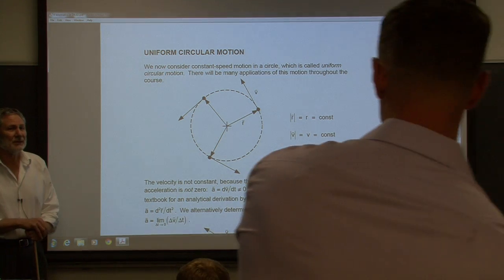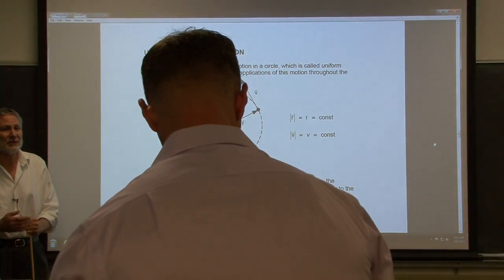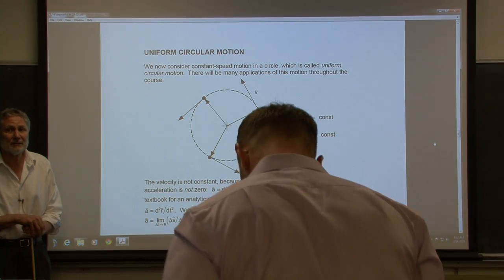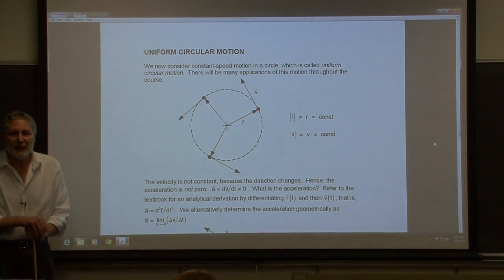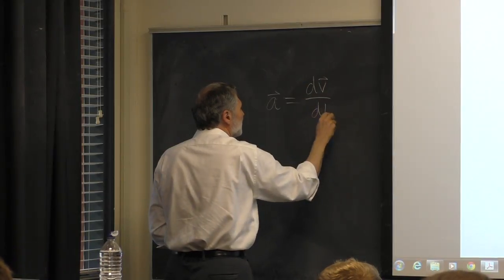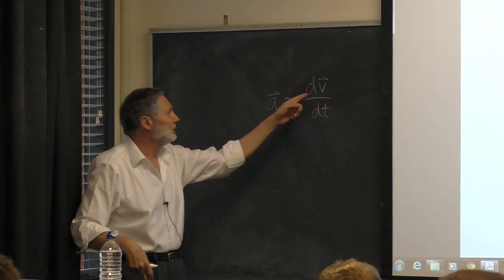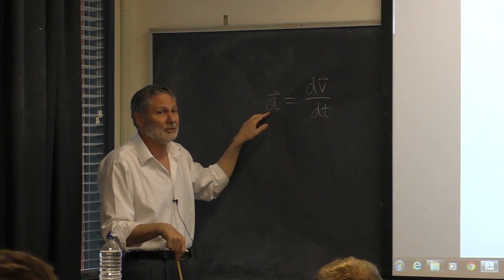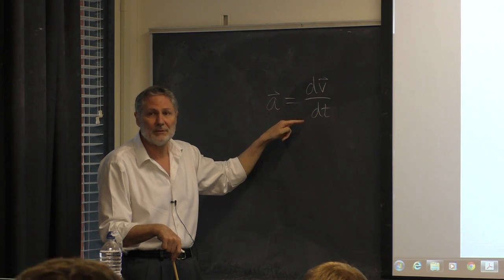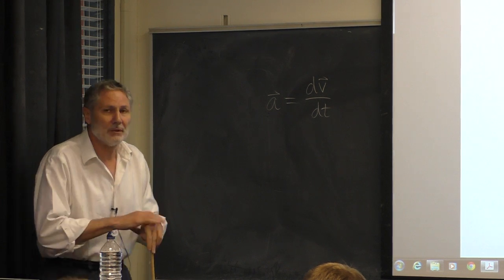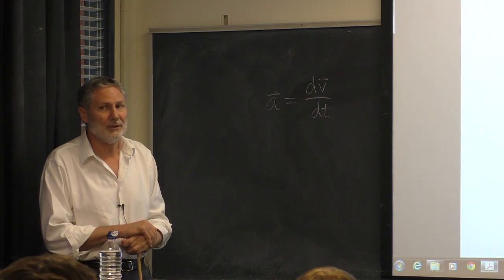The speed is constant, but the direction is continually changing. Is the acceleration zero? The acceleration is how the velocity changes — the rate of change of velocity with respect to time. Any way that you change the velocity, whether you change the speed or the direction, this derivative will not be zero. So there will be an acceleration here, and our goal right now is to determine that acceleration.